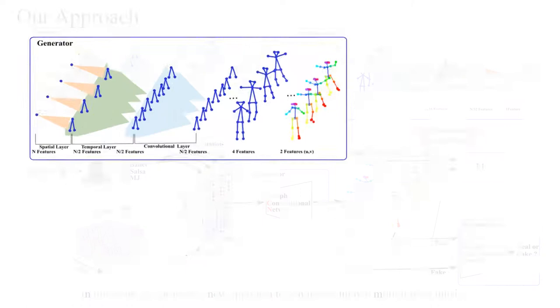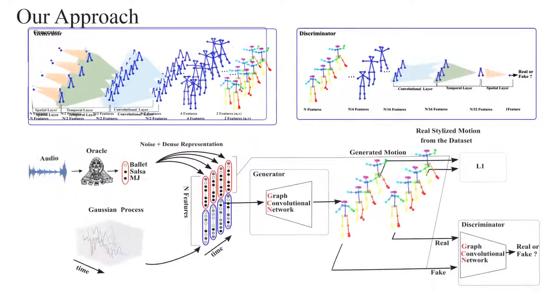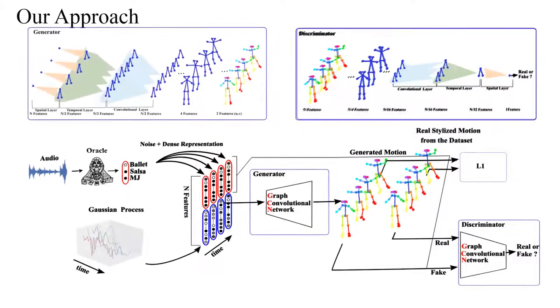In this work, we propose a new approach to synthesize human motion from music. Our approach has two main components: a generator network composed of spatial and temporal upsampling operations and graph convolutional layers, and a discriminator network that has the same layers of the generator but using downsampling instead of upsampling.